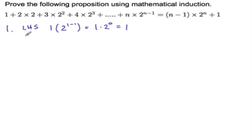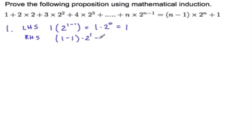And then if we do our right-hand side, we have 1 minus 1 times 2 to the 1 plus 1. So we have 0 here, times 2 is still 0, plus 1 is 1.